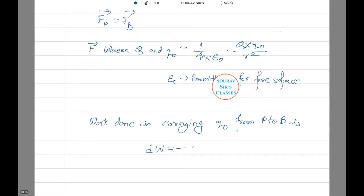Therefore, dW equals minus 1 by 4πε₀ into Q into Q₀ by R² whole into dr. This negative sign that we have indicates the negative work done due to repulsion between Q and the test charge Q₀.